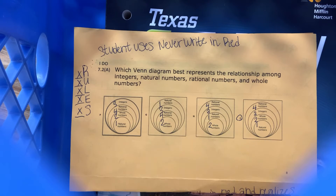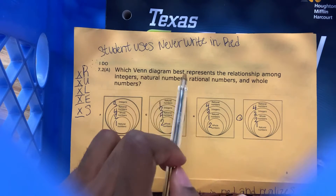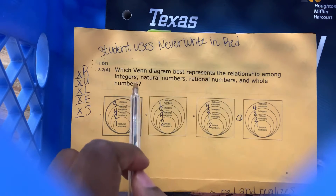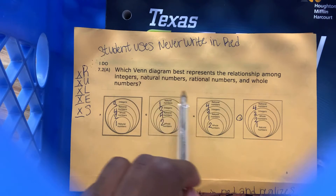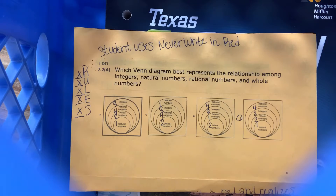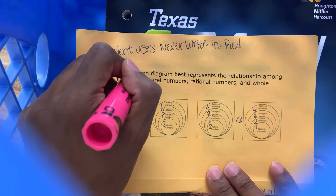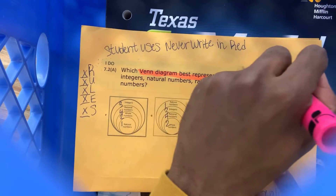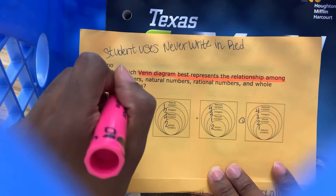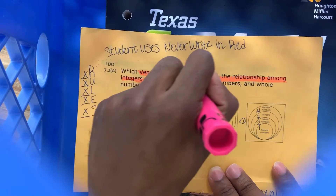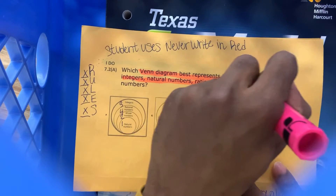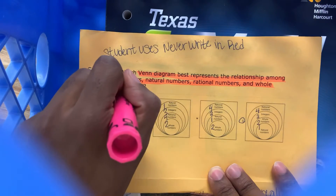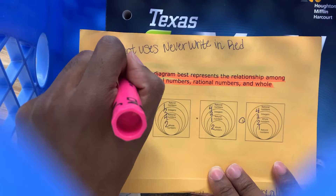Which Venn diagram best represents the relationship among integers, natural numbers, rational numbers, and whole numbers? So in this case, which Venn diagram best represents the relationship among integers, natural numbers, rational numbers, and whole numbers.